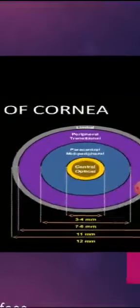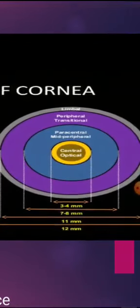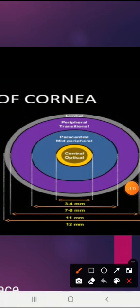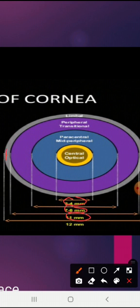The cornea can be mainly classified into four zones: the central optical zone, the paracentral or mid-peripheral zone, the peripheral zone, and the limbal zone. The central optical zone is about 3 to 4 millimeters, the paracentral zone is about 7 to 8 millimeters, the peripheral or transitional zone is about 11 millimeters, and the limbal zone is about 12 millimeters.